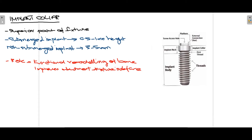The last part of the fixture is the implant collar, which is the most superior part of the fixture. There are two types: submerged implants, where the collar height is around 0.5 to 1 mm, and non-submerged implants, where the collar height is 3 to 5 mm. The role of the implant collar is functional remodeling of bone and improving the abutment-fixture interface.